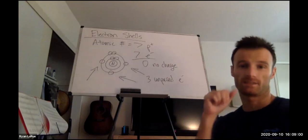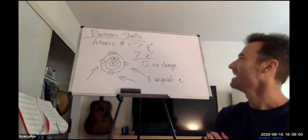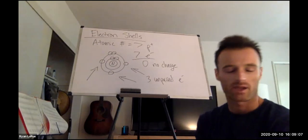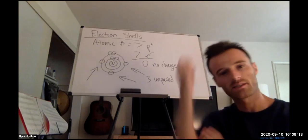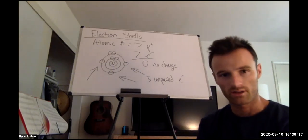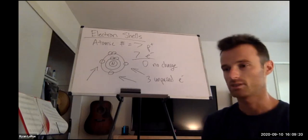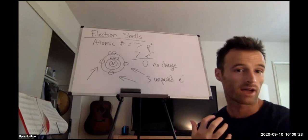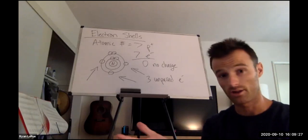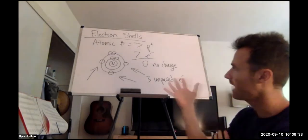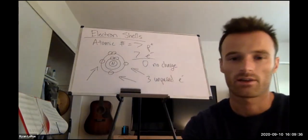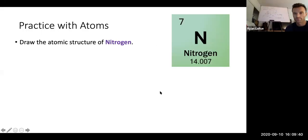Nitrogen is an important atom in proteins. It's involved in a process called transamination and the urea cycle, which is how we get rid of toxic ammonium ion in the liver and excrete it as urea — which has nitrogen in it. Nitrogen is a powerful atom, and in proteins it is very frequent and important.